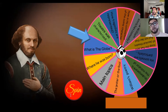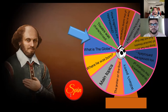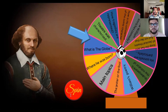What is the Globe? The Globe is the entity that houses his team of actors, built by Peter Street in 1599 on the banks of the river Thames. Its functions were only in summer. Very good.